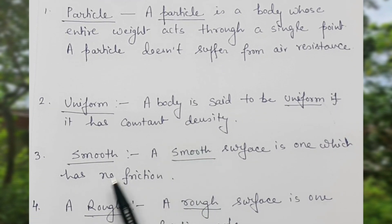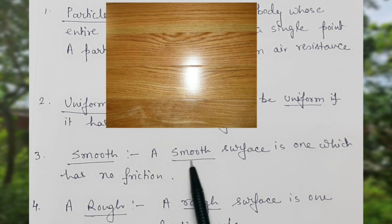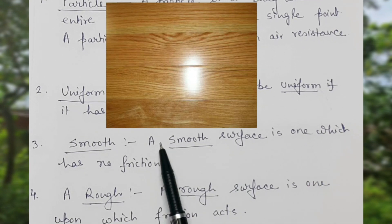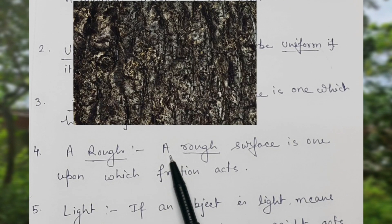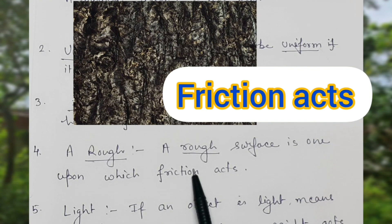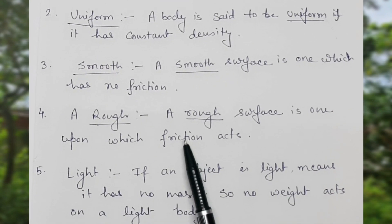The third important point is smooth. A smooth surface is one which has no friction. Then the fourth one is rough. A rough surface is one upon which friction acts, means it has friction.